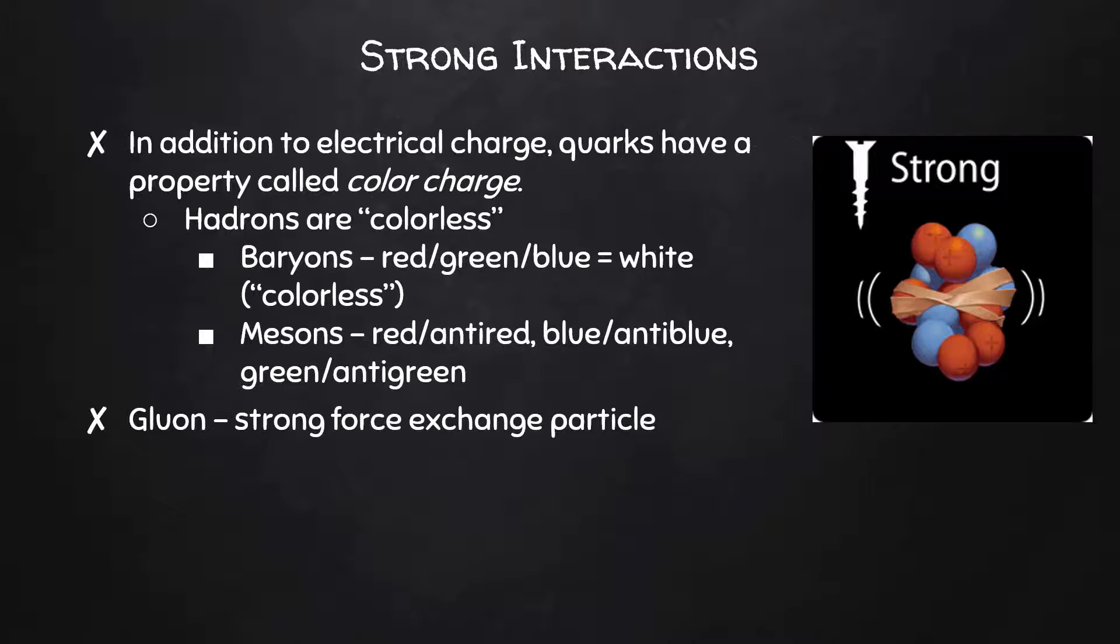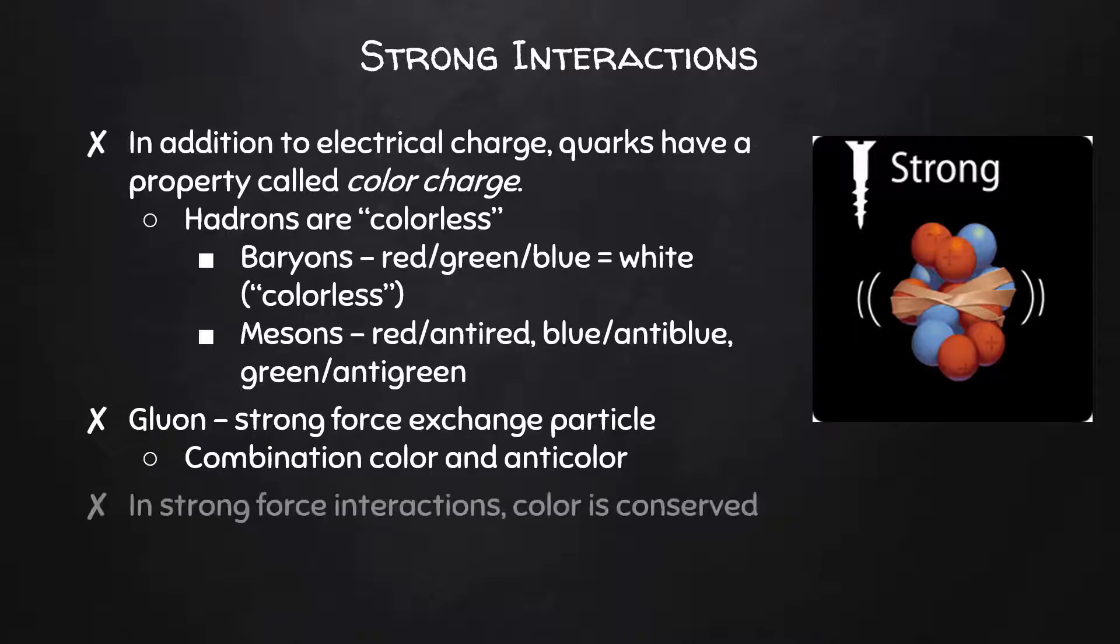Gluons, which are the exchange particle of the strong force, have a combination color and anti-color. So a gluon could be red anti-green, or blue anti-red, something like that. In strong force interactions, color has to be conserved. Before we move on, let's clear something up. We don't think that quarks are actually red or green or blue. What is true is that there is some property that these quarks have that come in three, actually six, when you think of the anti-colors, varieties. We simply use the idea of colors and our understanding of how colors can add up or cancel out as a useful analogy.